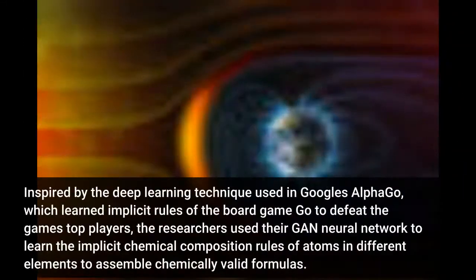Inspired by the deep-learning technique used in Google's AlphaGo, which learned implicit rules of the board game Go to defeat the game's top players, the researchers used their GAN neural network to learn the implicit chemical composition rules of atoms in different elements to assemble chemically valid compounds.